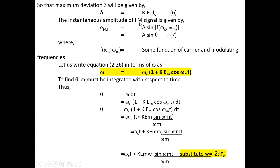The instantaneous amplitude of the FM signal is given by EFM = A·sin(θ), where θ is a function of both ωc and ωm — that is, some function of carrier and modulating frequencies.